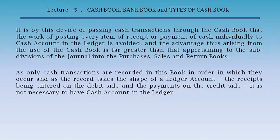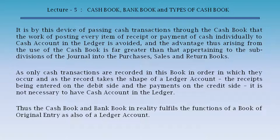As only cash transactions are recorded in this book in the order in which they occur, and as the record takes the shape of a ledger account — receipts being entered on the debit side and payments on the credit side — it is not necessary to have a cash account in the ledger. Thus, the cash book and bank book in reality fulfills the functions of a book of original entry as also of a ledger account.